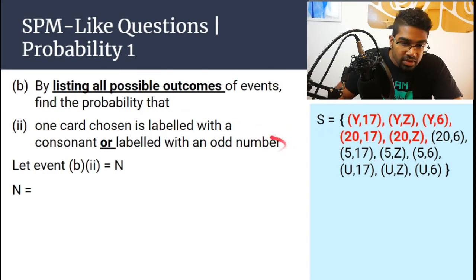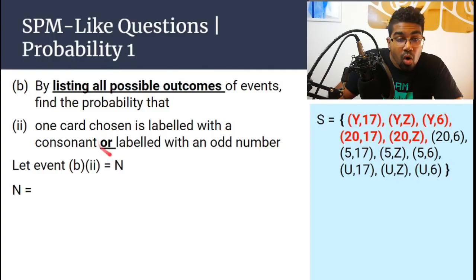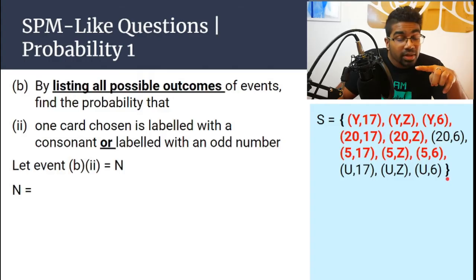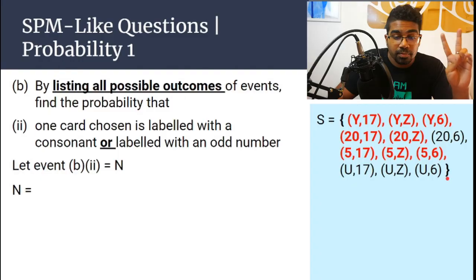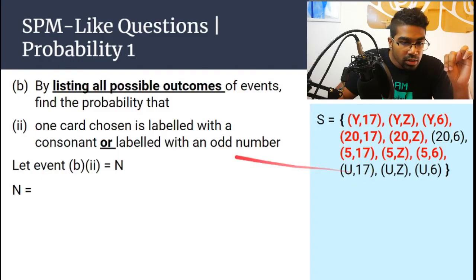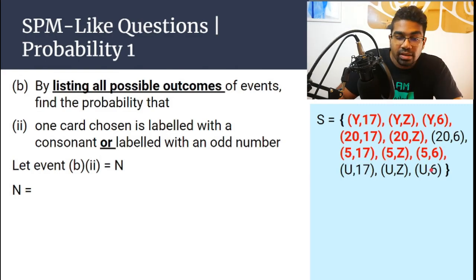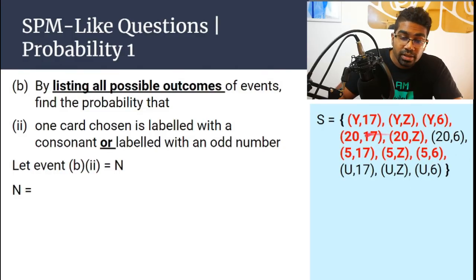For 5: 5 is an odd number, so automatically anything that contains 5 will be chosen — all three are included. Then U: U is a vowel, not a consonant, so it's not automatically included. We check one by one. U,17 — 17 is an odd number, yes. U,Z — Z is a consonant, yes. U,6 — U is a vowel and 6 is an even number, so we cannot choose U,6.